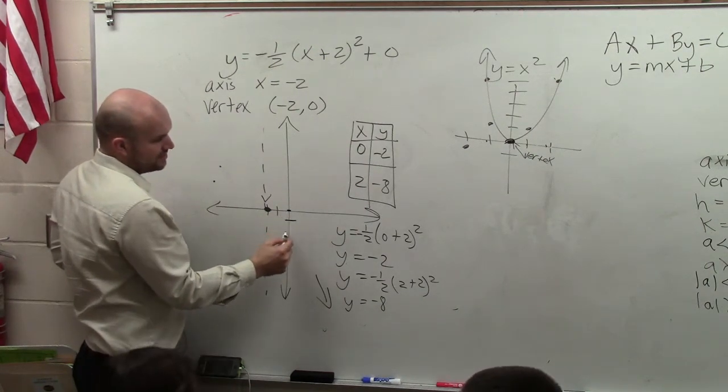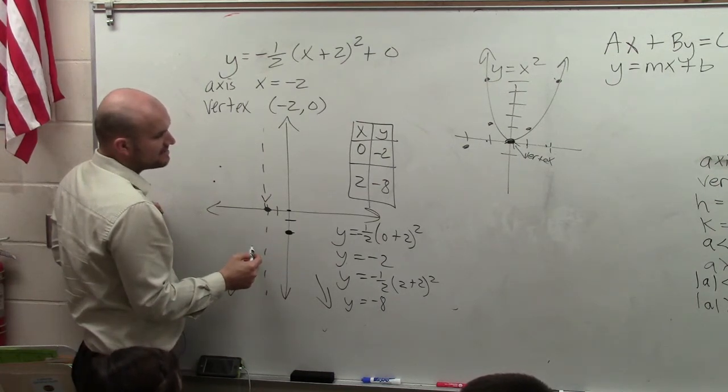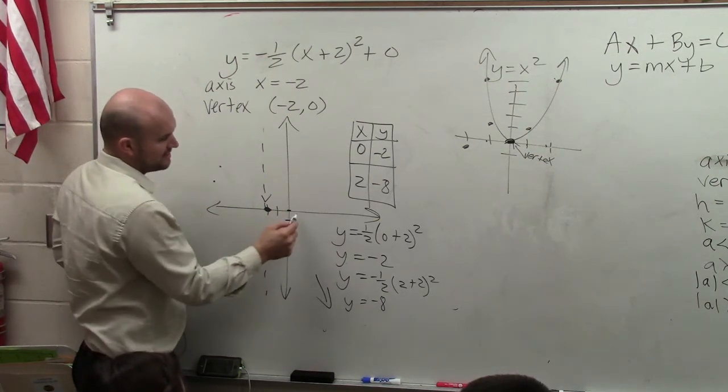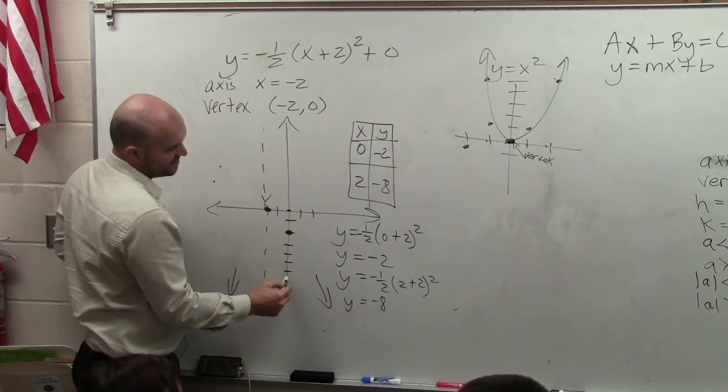So therefore, I go to 0, negative 2, 1, 2. And then I go down to 2, 8. 1, 2. And then go down 8. 1, 2, 3, 4, 5, 6, 7, 8.